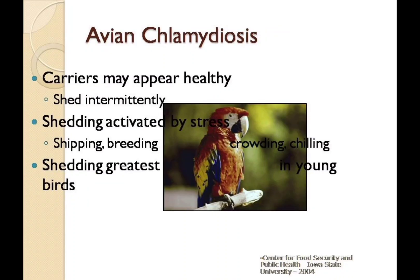Chlamydophila psittaci is excreted in the faeces and nasal discharges of infected birds. Birds can appear healthy but can be carriers that shed intermittently. Shedding is highest among young birds and may be activated by stress such as shipping, crowding, chilling and breeding.